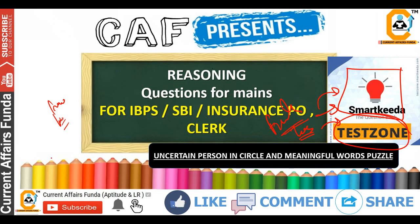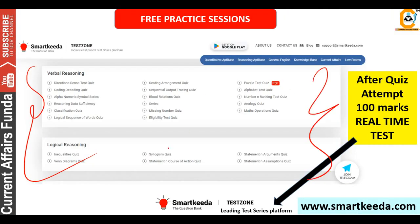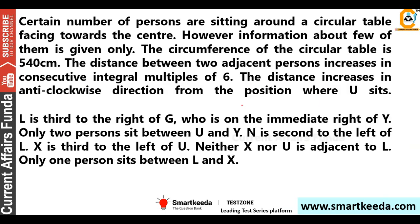Let's start today's session. Here is the question: a certain number of persons are sitting around a circular table facing towards the center. There are some persons facing the center sitting around a circular table. However, information about only a few of them is given.